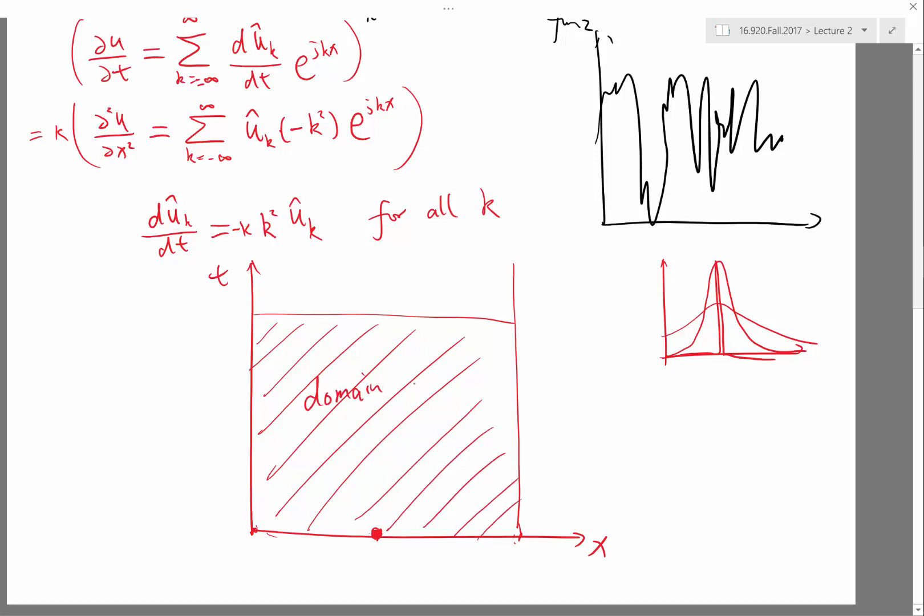So domain of influence is when you change, when you put a perturbation in the equation, where that perturbation is going to change the solution. The domain of influence for parabolic equations is all the spatial locations after the perturbation.